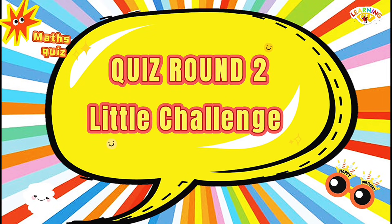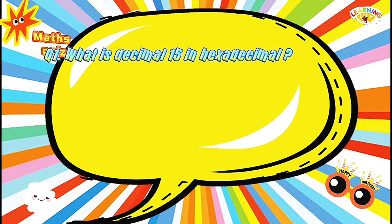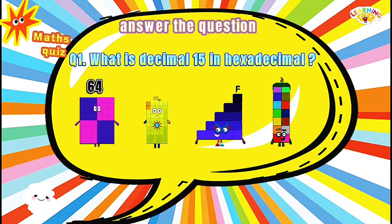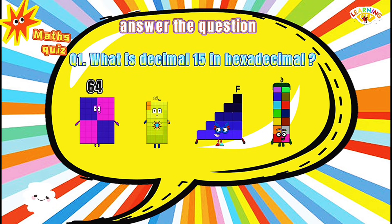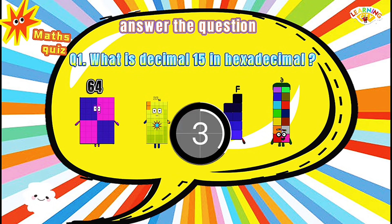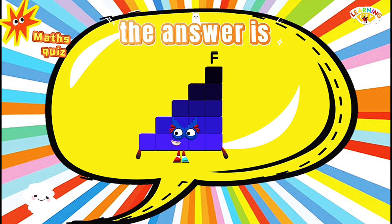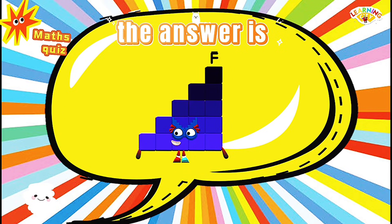Quiz Round 2 — Little Challenge. Question No. 1: What is decimal 15 in hexadecimal? Options are 64, 32, 15, 6. The answer is F.